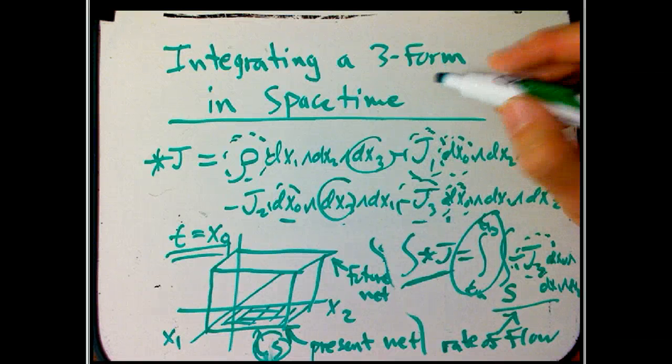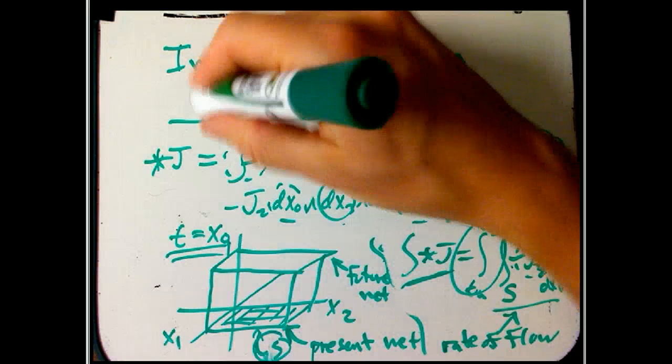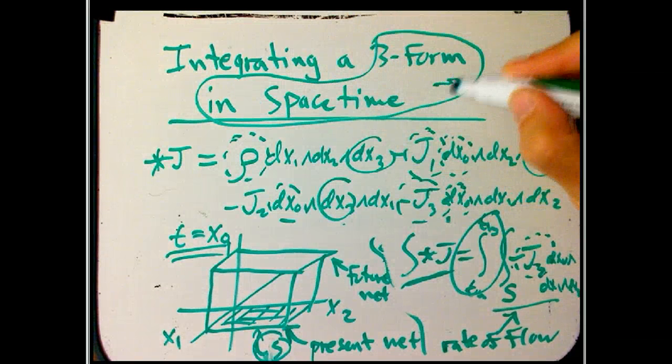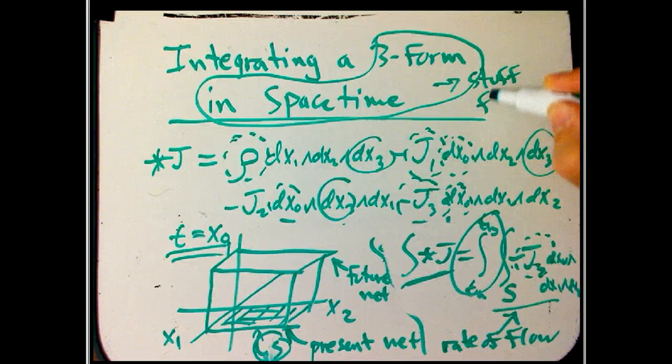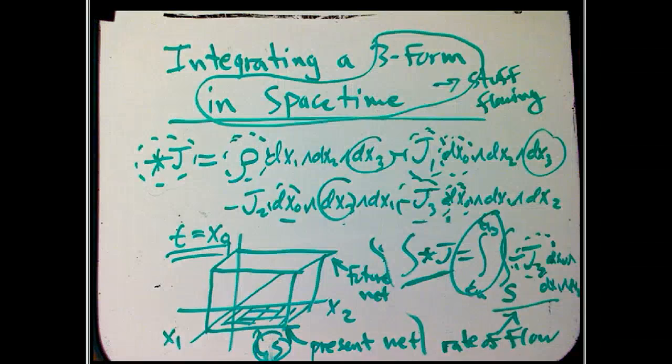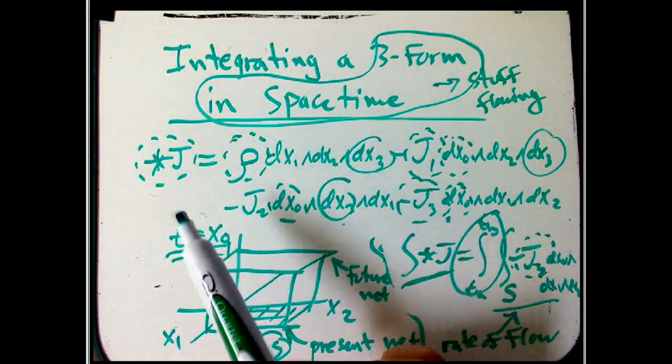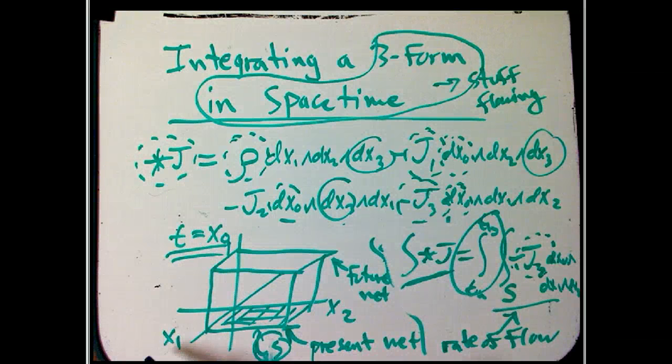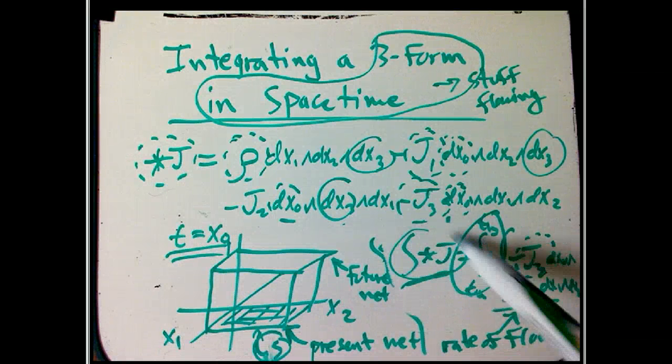So, in general, a three-form in spacetime is really the right way to describe stuff flowing. And using star, you can always translate between one-forms and three-forms. And sometimes one-forms are nicer to think about. But in a way, the star j is kind of the more natural thing, because that's the actual thing that goes into the integrals.